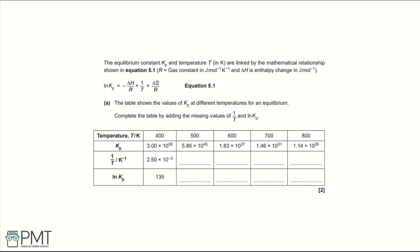Part A. The table shows the values of Kp at different temperatures for an equilibrium. Complete the table by adding the missing values of 1 over T and ln Kp. The key thing we need to notice about this table is that everything is to three significant figures, so our answers must also be to three significant figures.